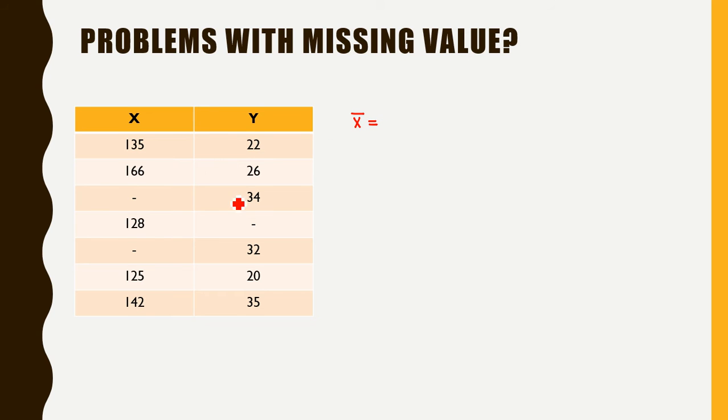There are seven observations, so I will take 1/7 multiplied by 135 plus 166 plus NA. I have no idea what this value is, plus 128 plus again NA plus 125 plus 142. Now the problem that arises while we are trying to sum all these observations is that we have two observations that are completely unknown to us, and so this entire sum actually depends on these two observations. Had these two NA values been known, there would be no problem calculating this sum.